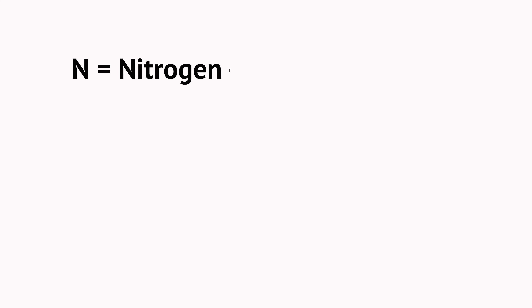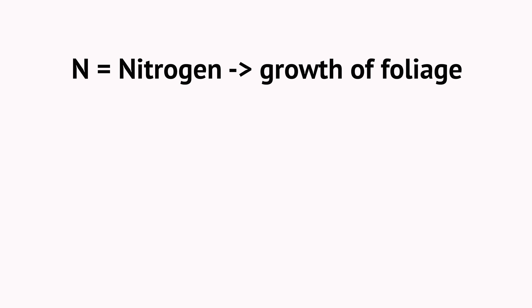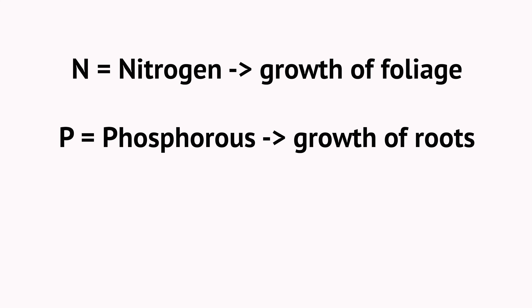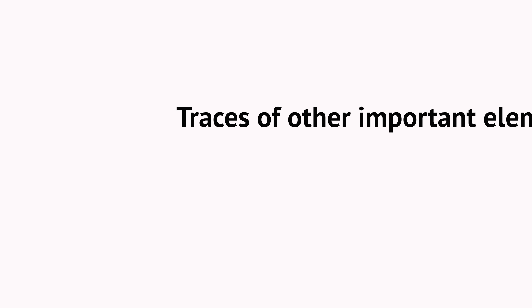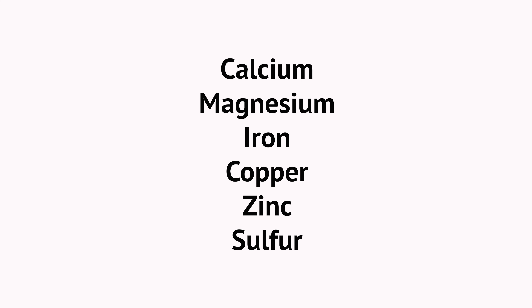So what does it stand for? N stands for nitrogen and promotes the growth of foliage and leaves. P stands for phosphorus and promotes the growth of roots, stems, blossoms, and fruit. K stands for potassium and this is important for the cell function of the plant — how well plants can turn certain elements and nutrients into their own food. Fertilizer also contains traces of other important elements like calcium, magnesium, iron, copper, zinc, or sulfur.